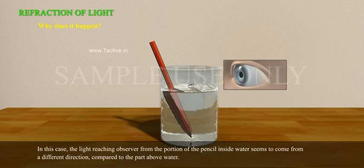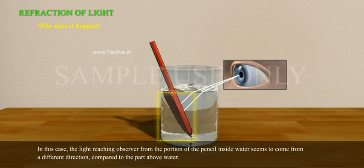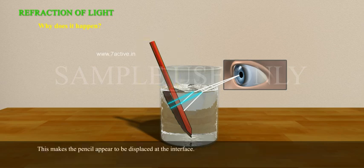In this case, the light reaching the observer from the portion of the pencil inside water seems to come from a different direction compared to the part above water. This makes the pencil appear to be displaced at the interface.